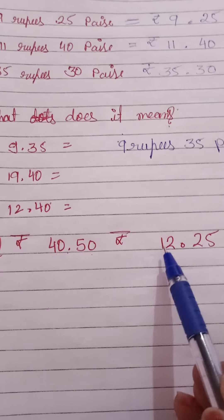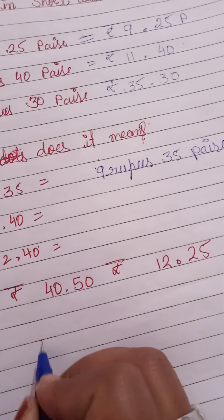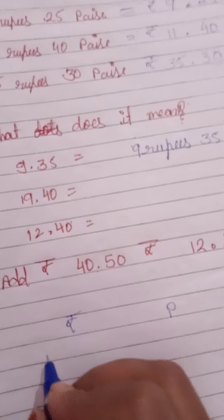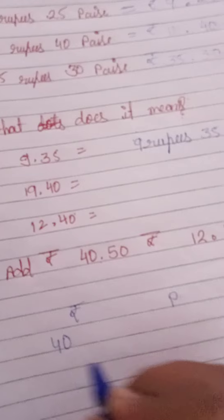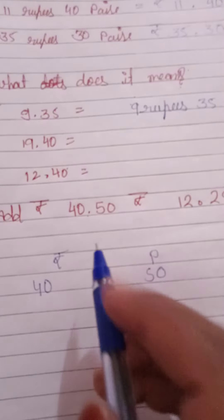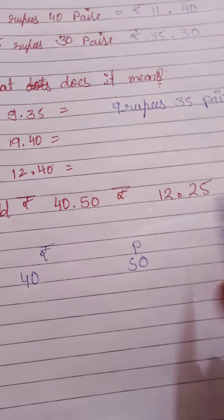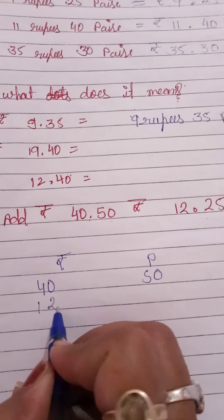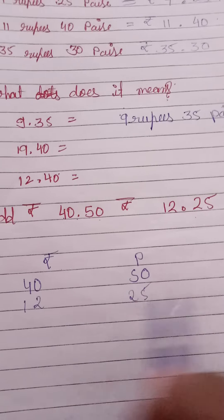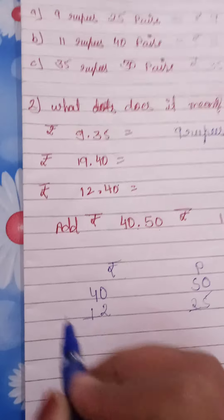So 50 paise, and there is 25 paise, and 40 is rupees, and 12 is rupees. So pehle hum log kya karenge, ek rupees ka column banaenge and paise ka column banaenge. Ab kya karenge, rupees wale ko rupees ke side mein and paise wale ko paise ke side mein. So 40 rupees, 50 paise, 40 rupees, 50 paise. Now 12 rupees, 25 paise. Now what do we do?